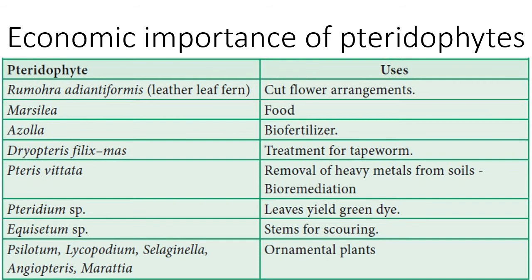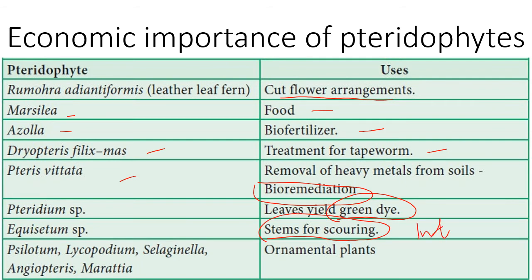A summary table of other pteridophyte uses: Rumohra adiantiformis is used in cut flower arrangement. Marsilia is used as food. Azolla is used as a bio-fertilizer for fixing atmospheric nitrogen. Dryopteris filix-mas is used in treatment of tapeworms. Pteris vitata is used for removal of heavy metals from soils through bioremediation. Pteridium species leaves yield green-coloured dye. Equisetum species stems are used for scouring and also as gold indicators. Psilotum, Lycopodium, Selaginella, and Angiopteris are grown as ornamental plants.